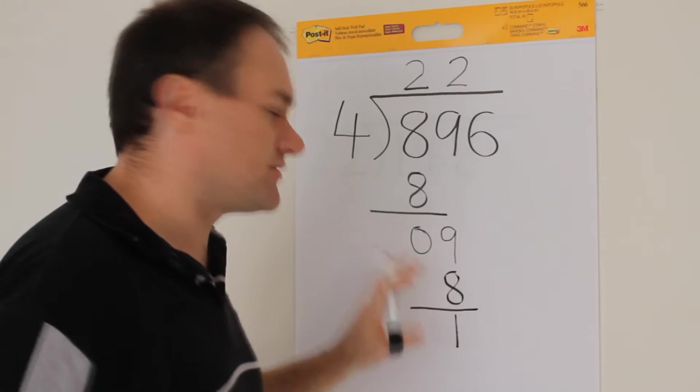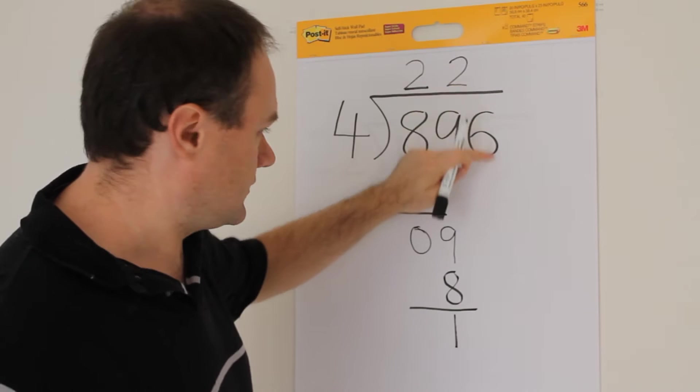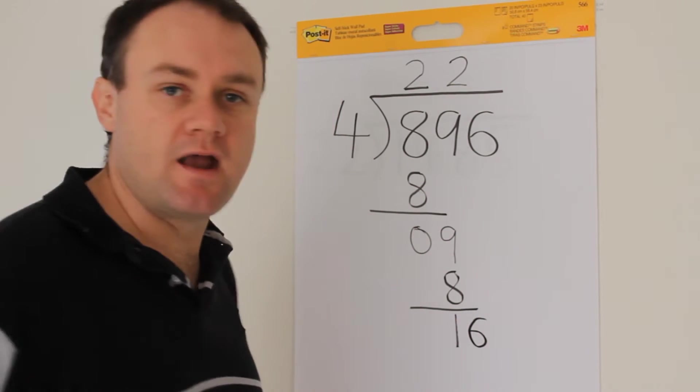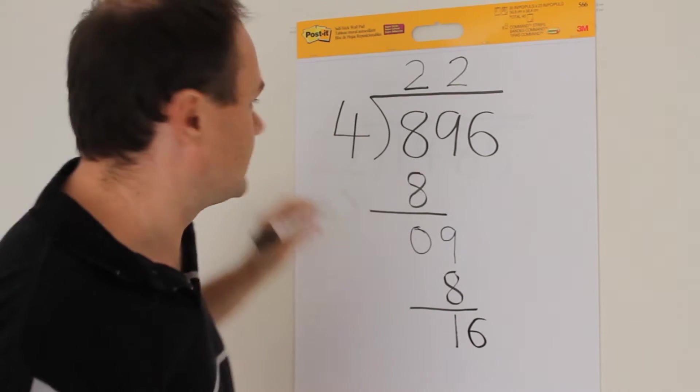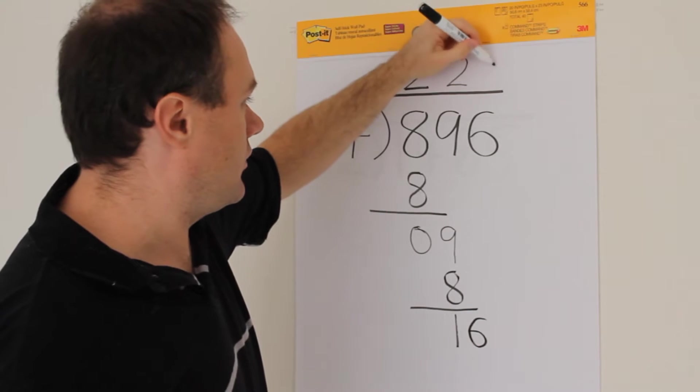What is 9 minus 8? Equals 1. Again, the comparison step, we won't worry about it at this point. Go straight to the bring down. Bring down the 6. And now we move to the last phase, which is how many times does 4 go into 16? The answer is 4.